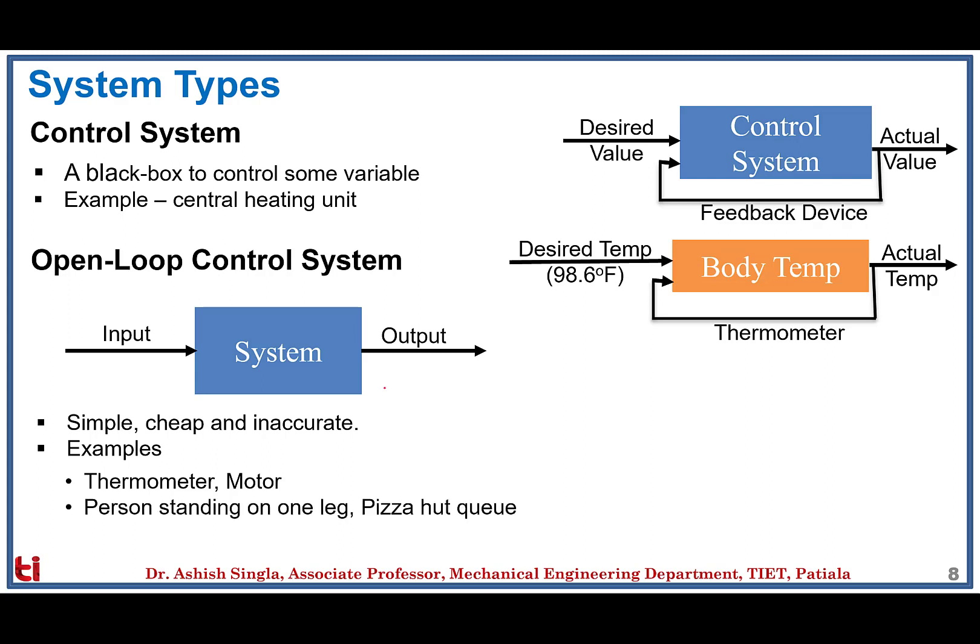Another example: if you stand on one leg with both arms in the air and close your eyes, your sensory feedback to the mind is disconnected and you start to wobble. A pizza shop in a mall is another example — the main control objective is to sell maximum pizzas and satisfy customers with minimum waiting time. The shop has no sensor to identify how many people will enter in the next 30 minutes, but based on statistical data it manages decently. Similarly, a toll plaza cannot predict how many vehicles will enter in the next hour. All these are typical open loop control system examples.